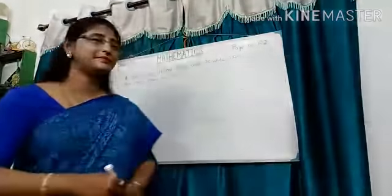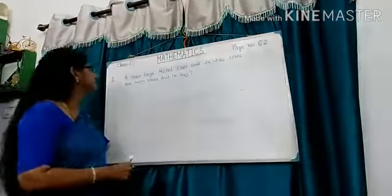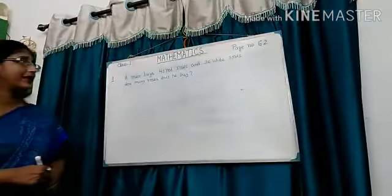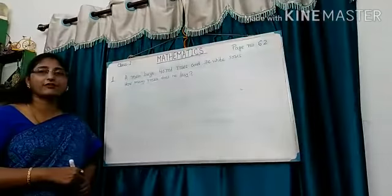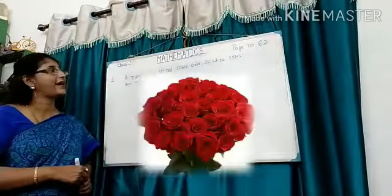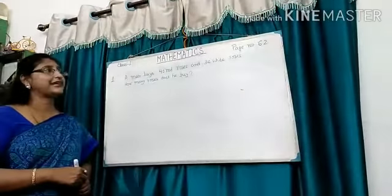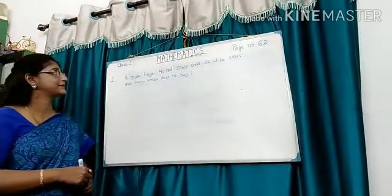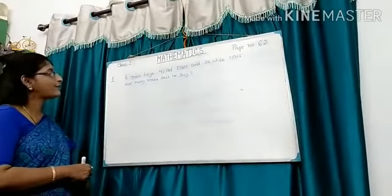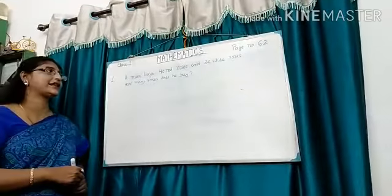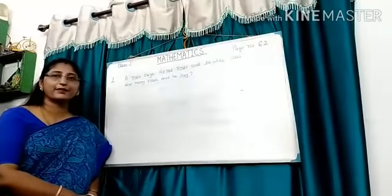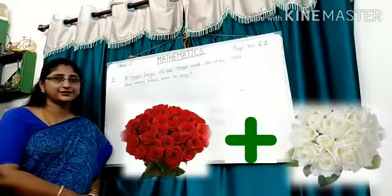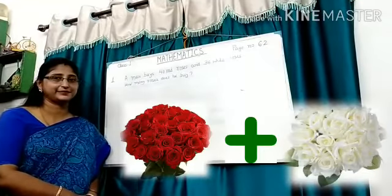Let's solve another example. A man buys 40 red roses and 36 white roses. How many roses does he buy? Again, we find the total number of roses by adding them.